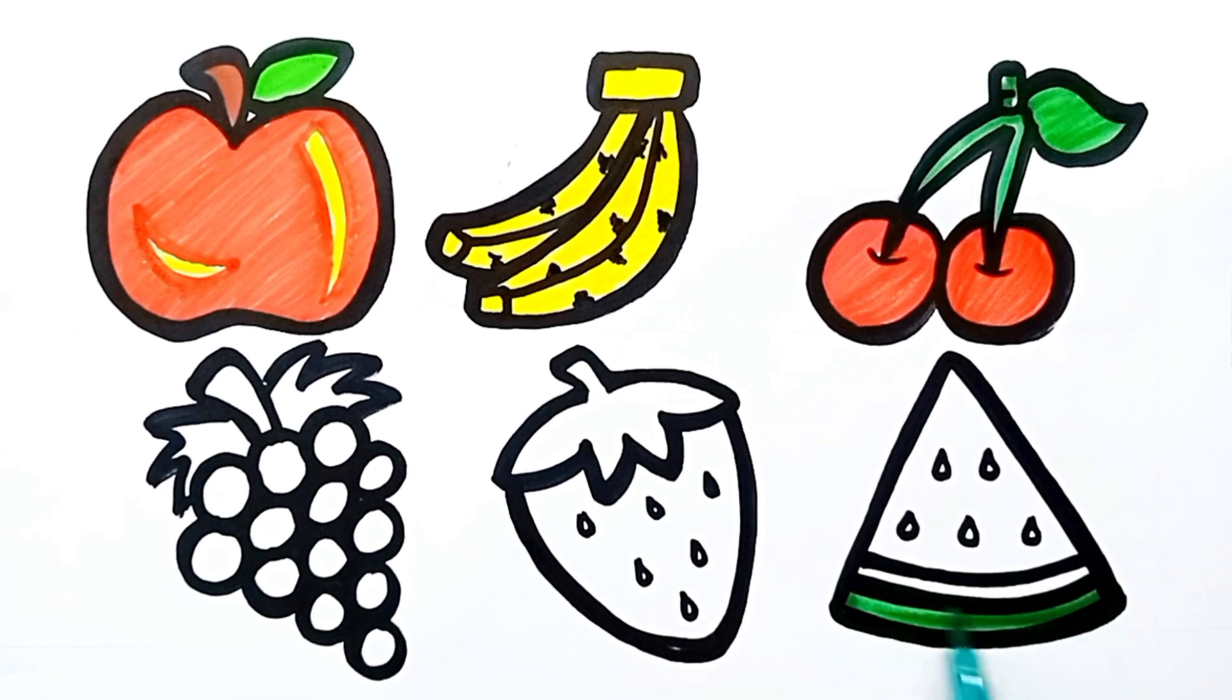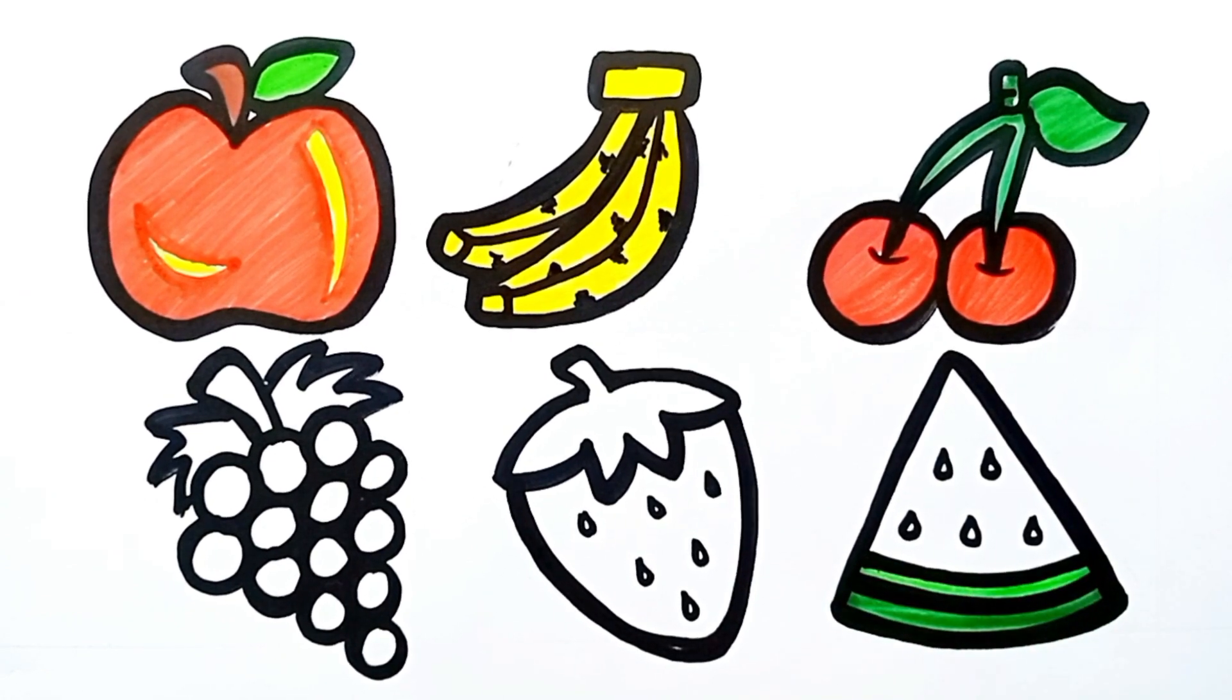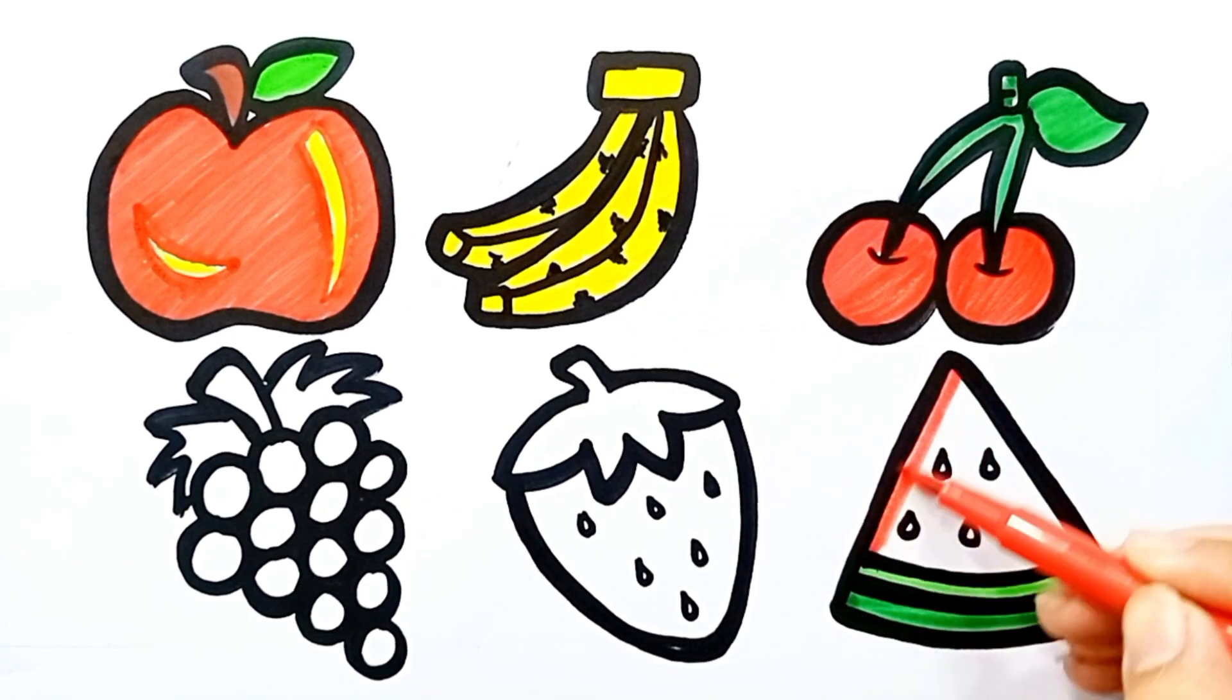Green color in the watermelon. Light green. Here is red color.